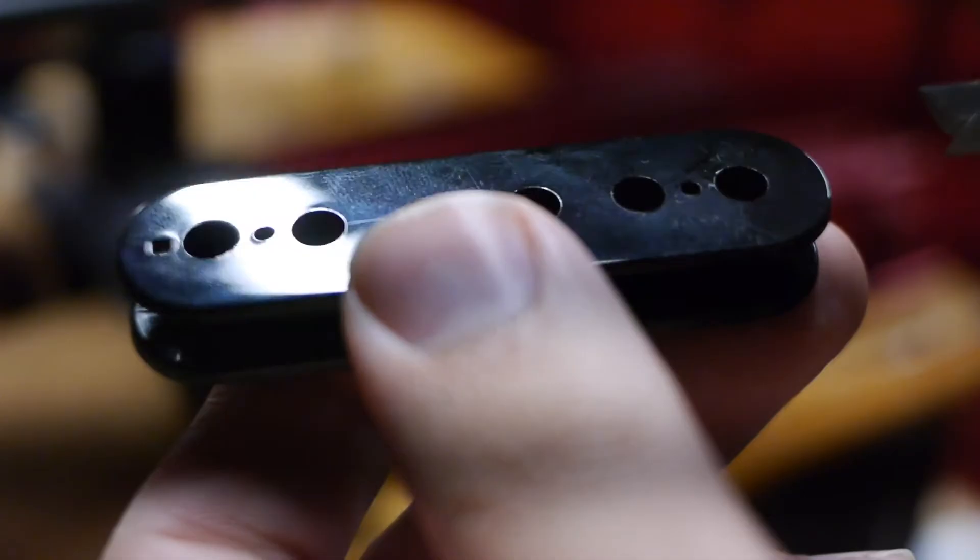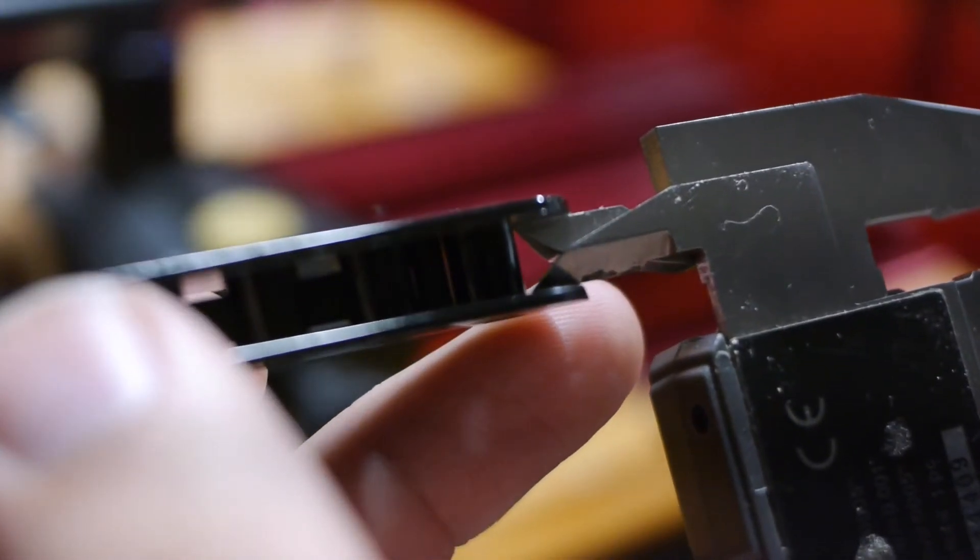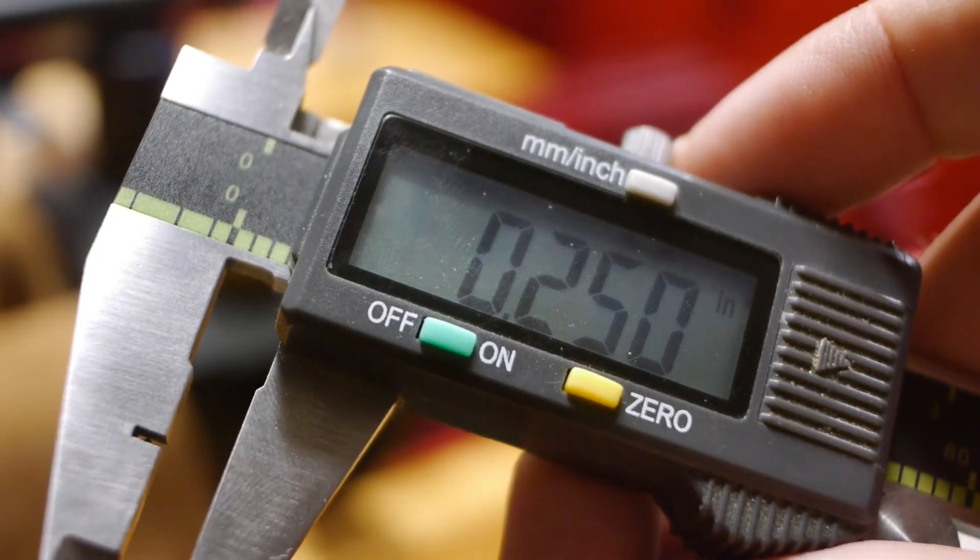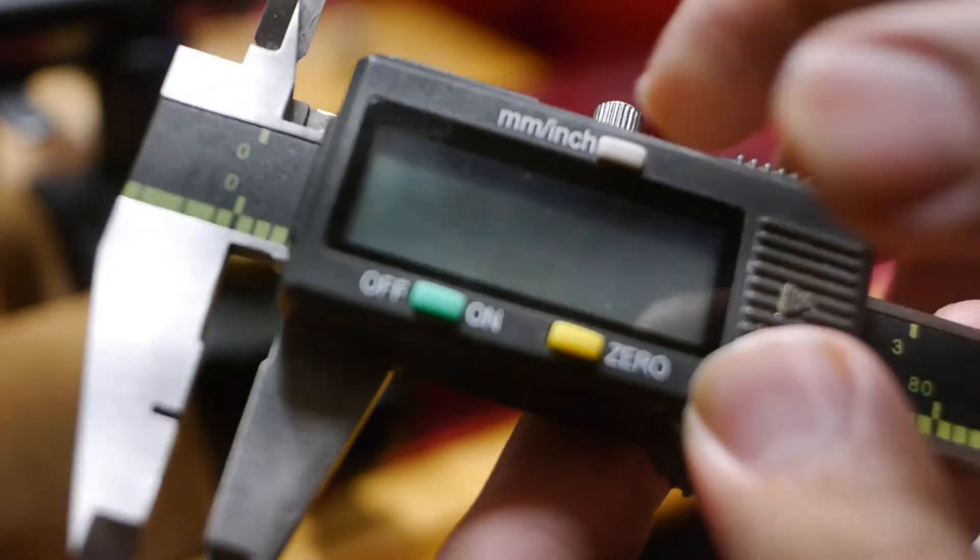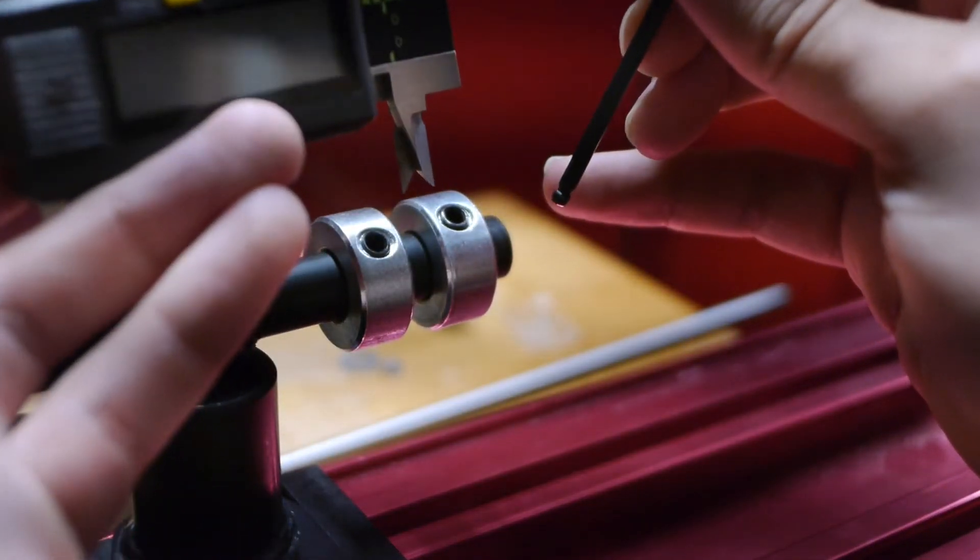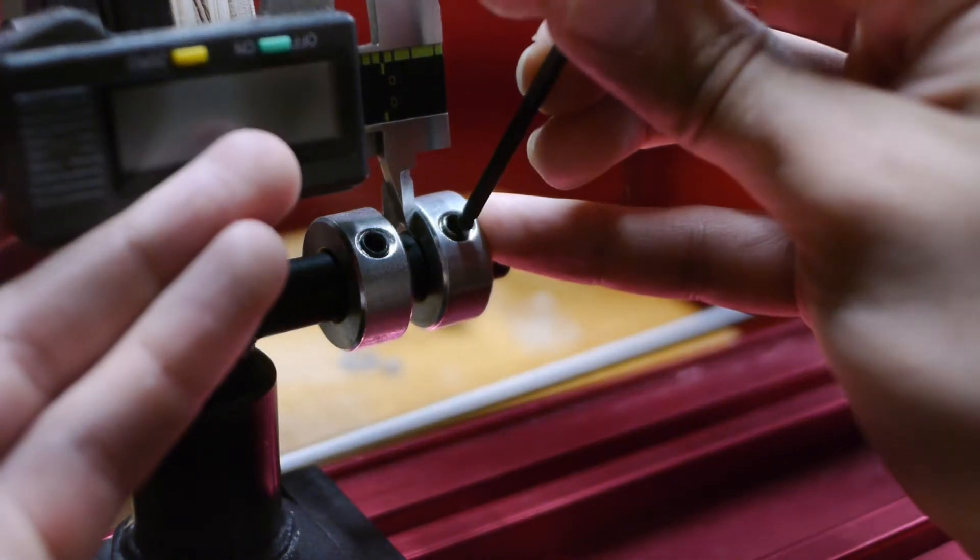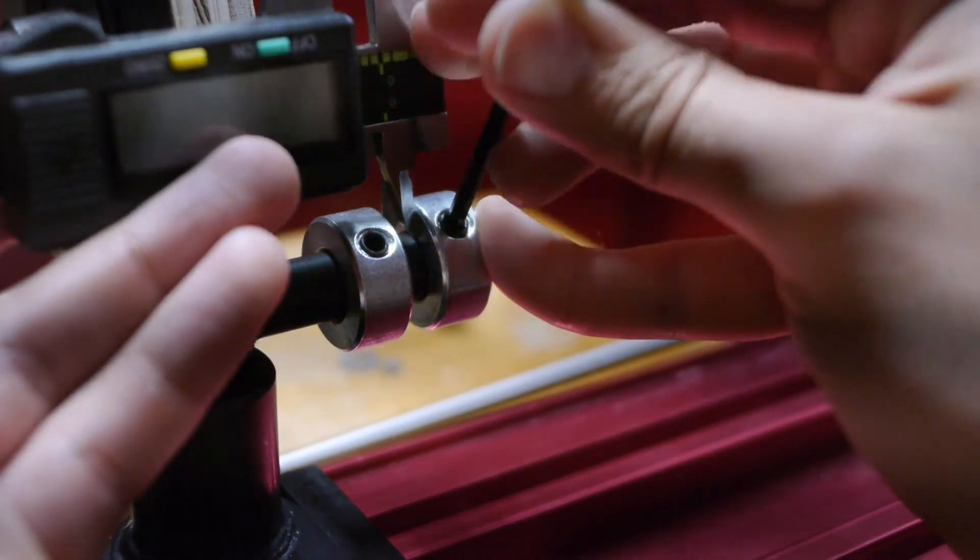So the first thing I'm going to do is measure the inside of this bobbin. Right on quarter of an inch. Lock it. And we're going to set our traverse limiter right to that measurement. Push it up against the jaws, tighten it.